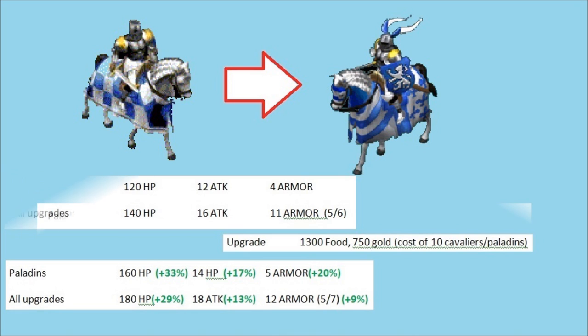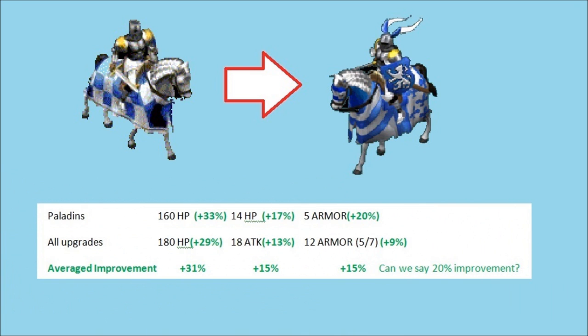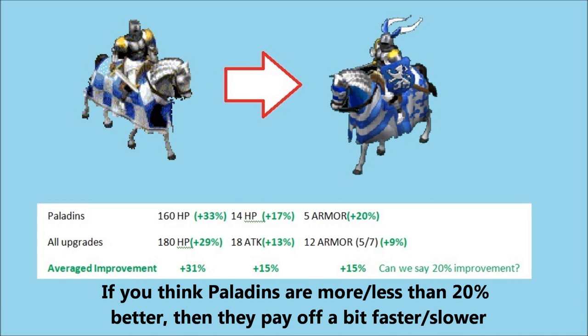So now just looking at the Paladin improvement percentages in isolation, what I'm going to do is I'm going to average each of those columns, and then I'm going to average that averaged row. And so what we can ultimately say is maybe the Paladin represents about a 20% improvement. That's if you average 31%, 15%, and 15%. You can argue that those things should be weighted differently, but I've just weighted them all the same here. And we're going to say it's about a 20% improvement.